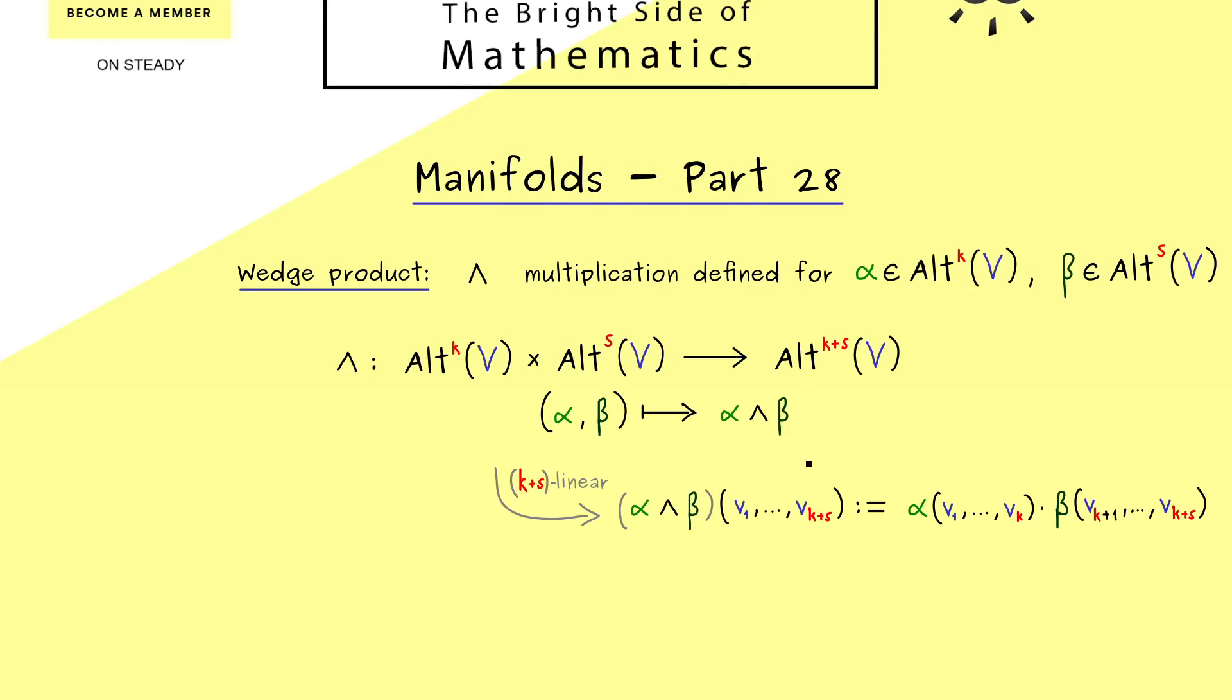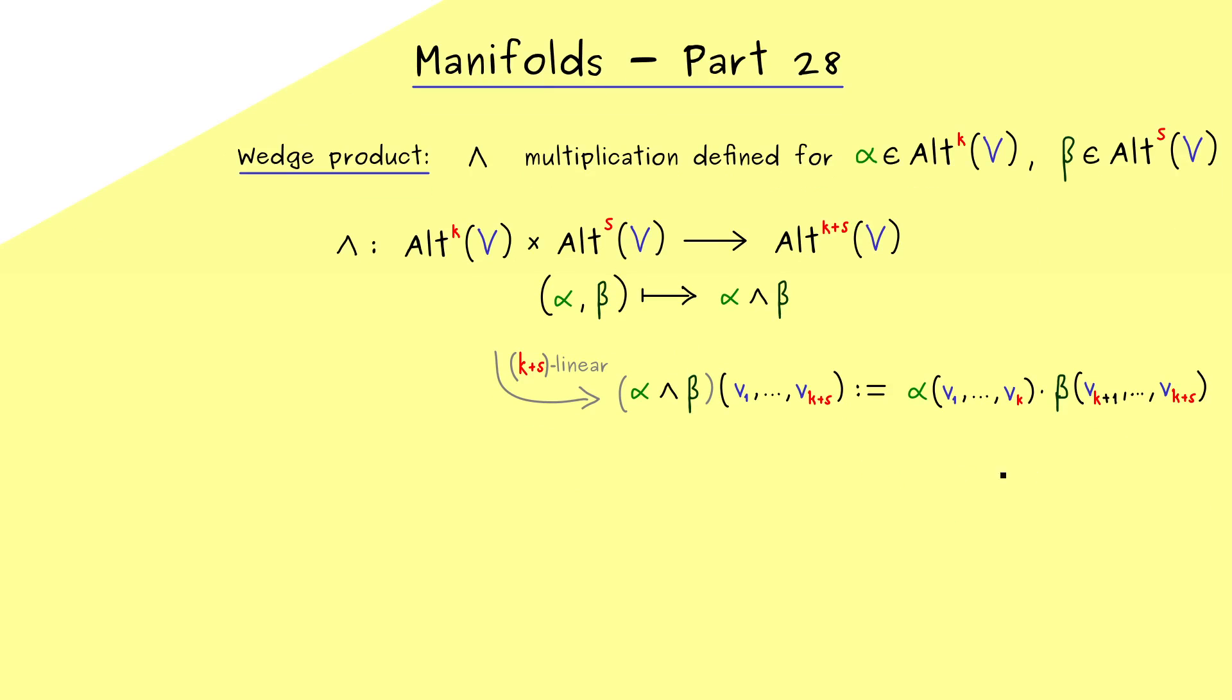So this is definitely a nice definition that gives us a (k+s)-linear map. So it is a multilinear map, however the problem is it is not an alternating map with this definition. Therefore, in our case here, we cannot use this simple definition for a multiplication.